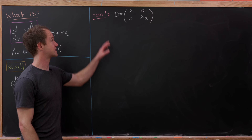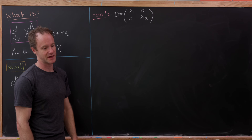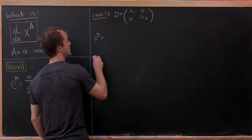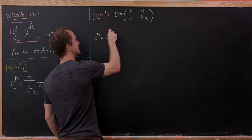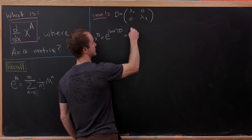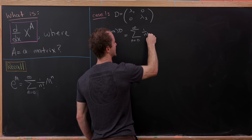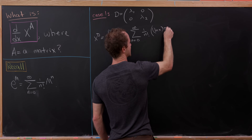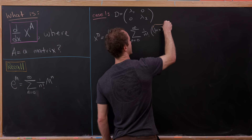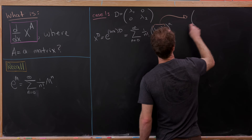The first example is a diagonal matrix. Let's take D to be the matrix with λ₁ and λ₂ on the diagonal and zeros off-diagonal. We'll start by trying to get a handle on what x to the D is. Using logarithm rules, we can write this as e to the natural log of x times D, and then expand that out using our matrix exponential formula.